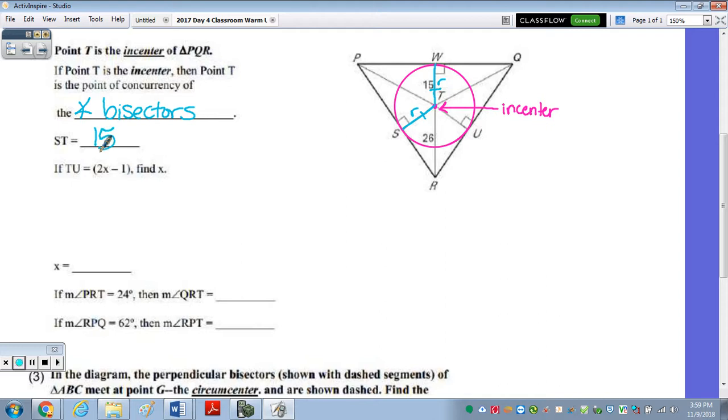And not only is ST 15, but the third radius of the circle, TU, is also 15. So when I'm trying to find X in the next part of the question, I can substitute for the length of TU 15 and solve for X. So we add 1, we get 16, divide by 2, and X is 8.